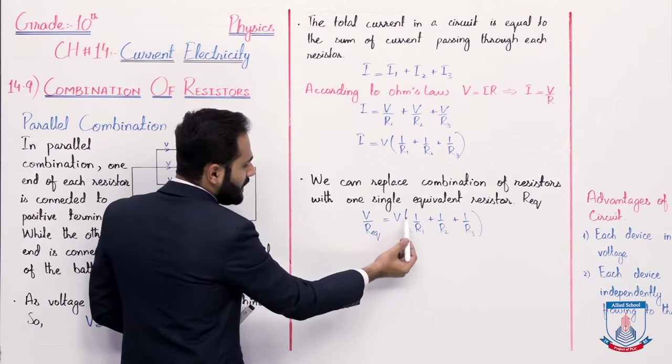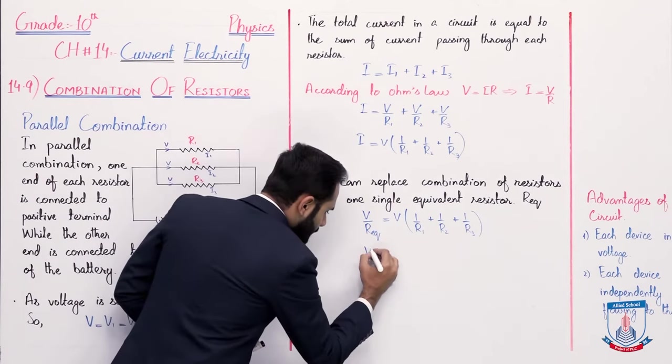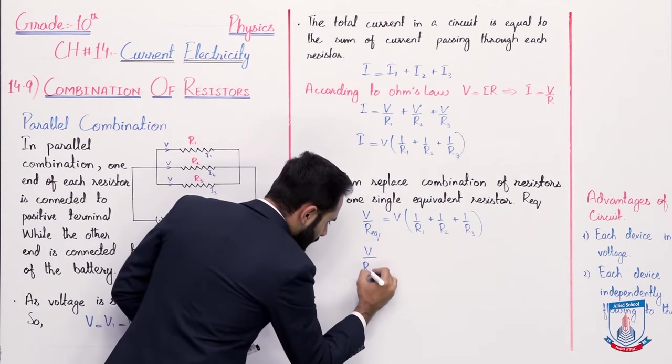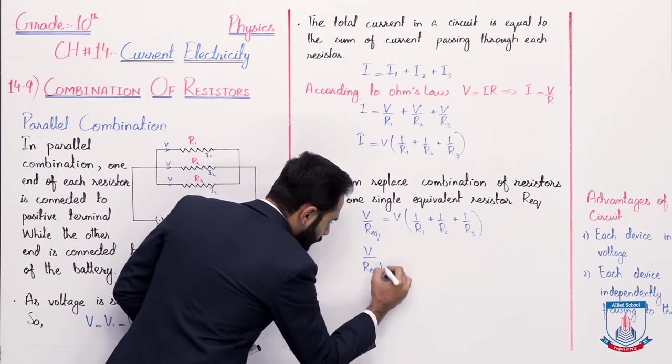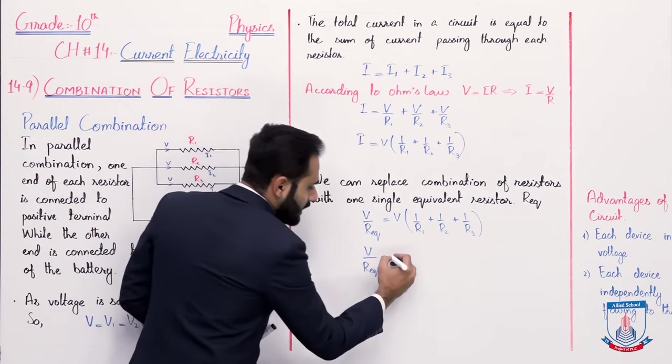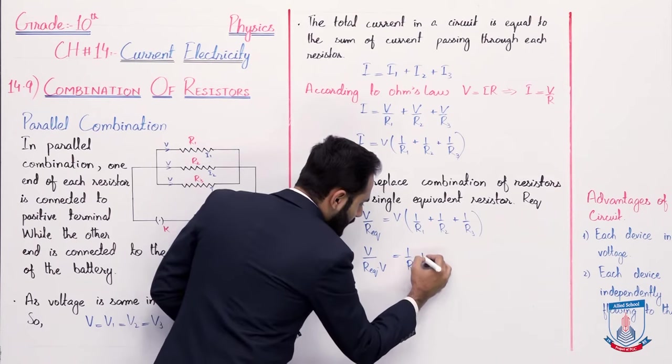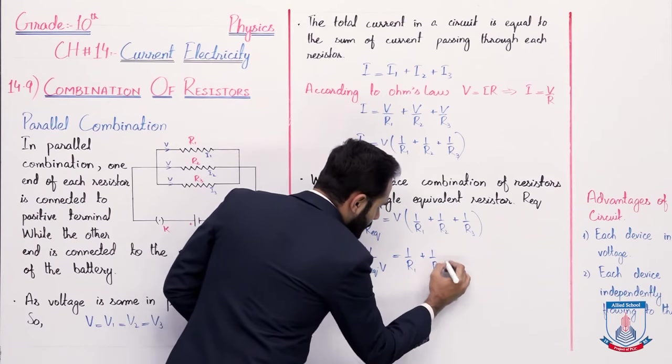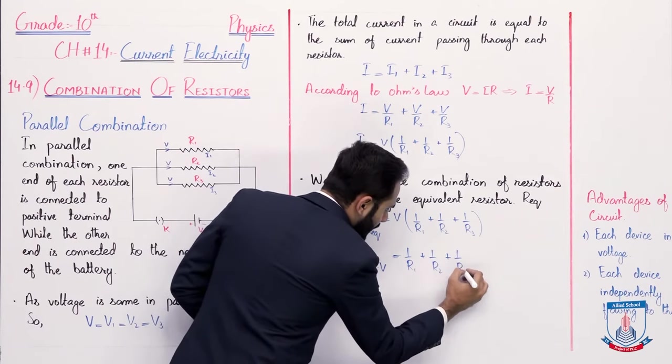Now, because V is multiplied on this side, we divide both sides by V. So, 1 over R equivalent is equal to 1 over R1 plus 1 over R2 plus 1 by R3.